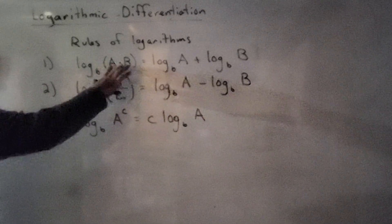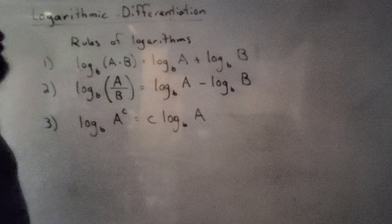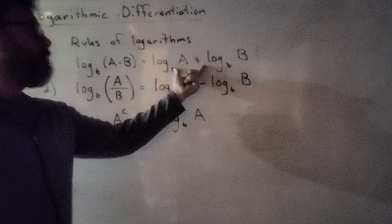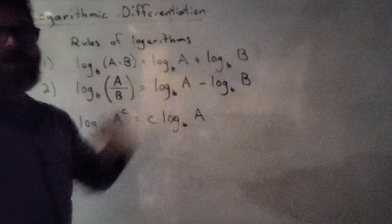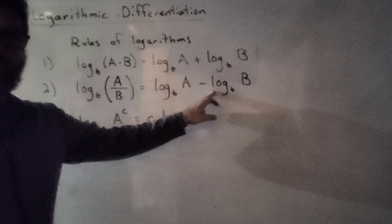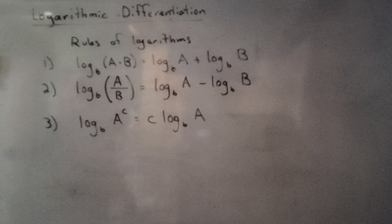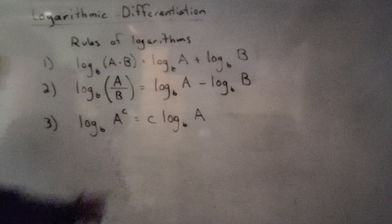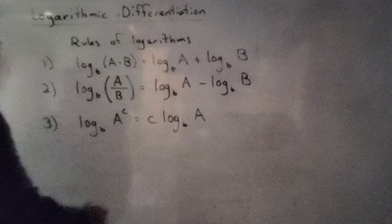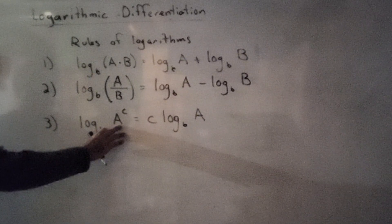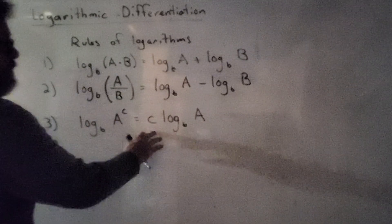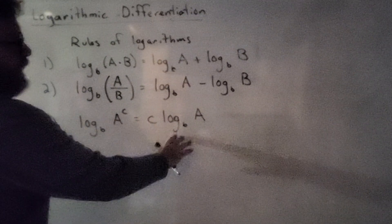The log base b of A times B is going to be log base b of A plus log base b of B. The quotient gives subtraction, and the real benefit of logarithms is what you can do with powers — you can pull them out and make coefficients. So the log base b of A raised to the c power is going to be c times the log of A.